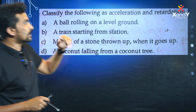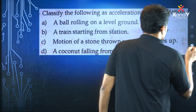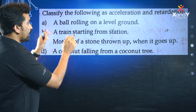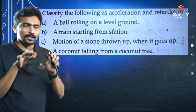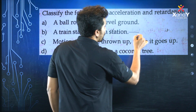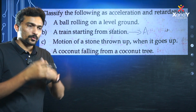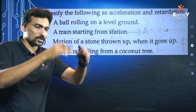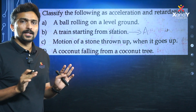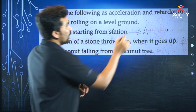Classify the following as acceleration or retardation. A train starting from a station starts at zero speed, so when it starts it accelerates — this is acceleration. A ball rolling on a level ground has the same speed, because the friction force acts on it. So that is retardation.